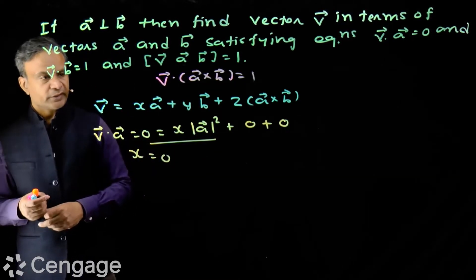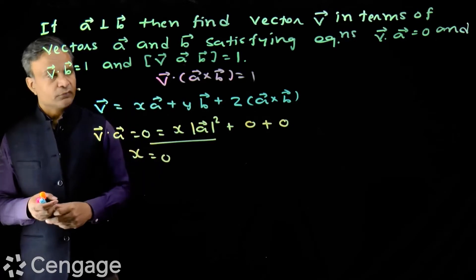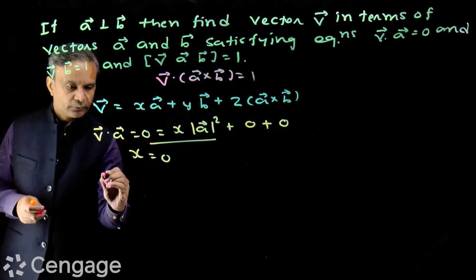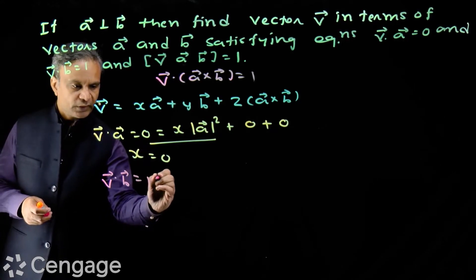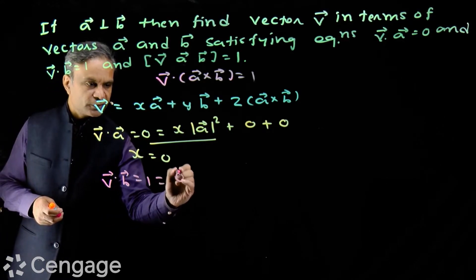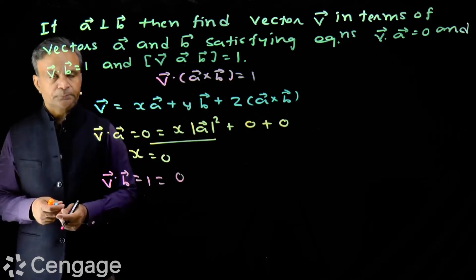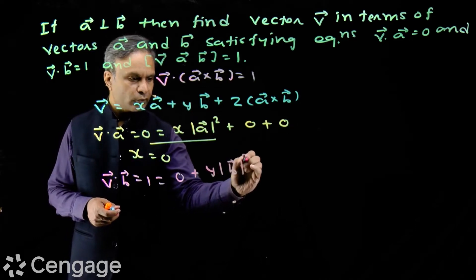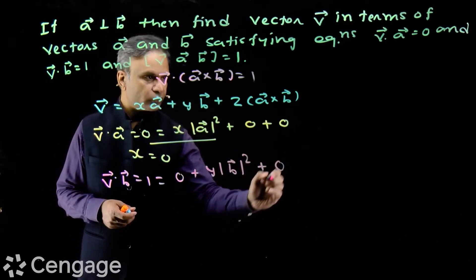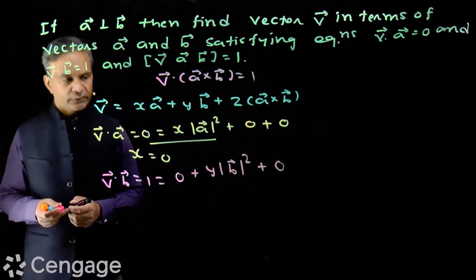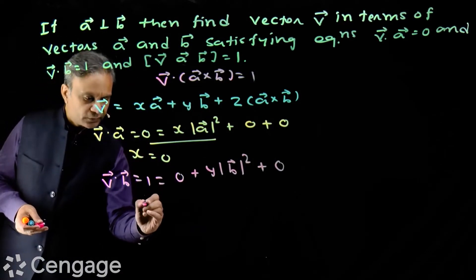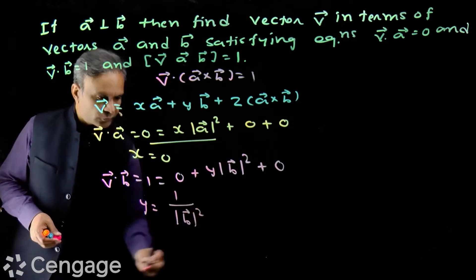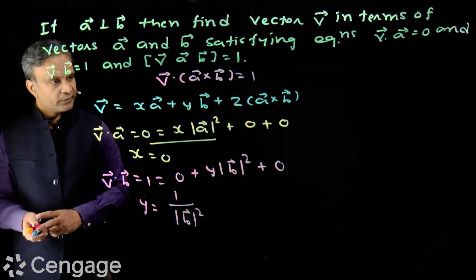Then we use the equation v dot b equals 1. For that we take the dot product with vector b. We get v dot b, which is actually 1. This equals zero — because a dot b is zero since a is perpendicular to b — plus y into square of modulus of b, plus zero, since a cross b dot b will be zero. From this we get the value of y: y equals 1 over square of modulus of b.